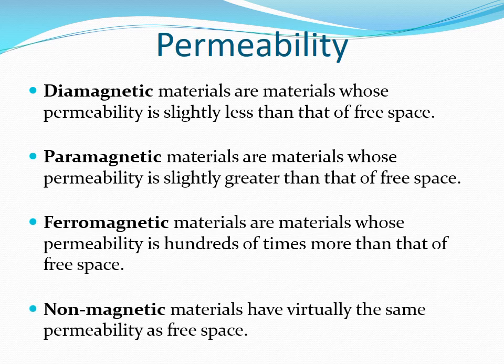Depending on the value of permeability compared to that of free space, we can put materials into four groups. Number one, diamagnetic materials: materials whose permeability is slightly less than that of free space. Paramagnetic materials are materials whose permeability is slightly greater than that of free space. Ferromagnetic materials are materials whose permeability is hundreds of times more than that of free space. Non-magnetic materials are materials that virtually have the same permeability as that of free space.